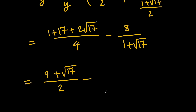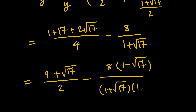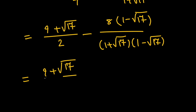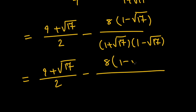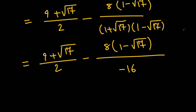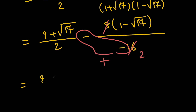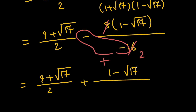To simplify the second fraction, we rationalize the denominator by multiplying both the top and bottom by 1 minus root 17. This gives us 8 times 1 minus root 17 on the top, and in the bottom we get 1 minus 17, which is negative 16. We can cancel the negative 16 with the 8 to get 2 in the bottom, and the two negative signs combine to a positive sign. So we have 9 plus root 17 divided by 2, plus 1 minus root 17 divided by 2.